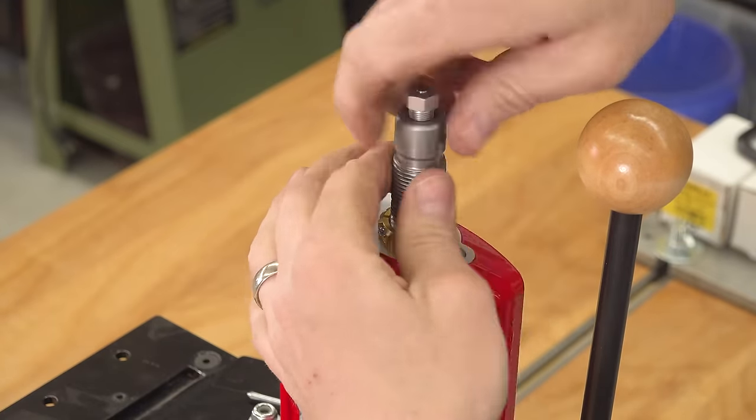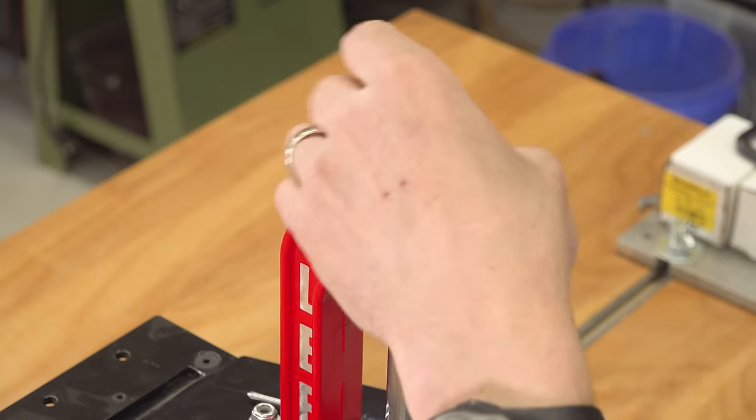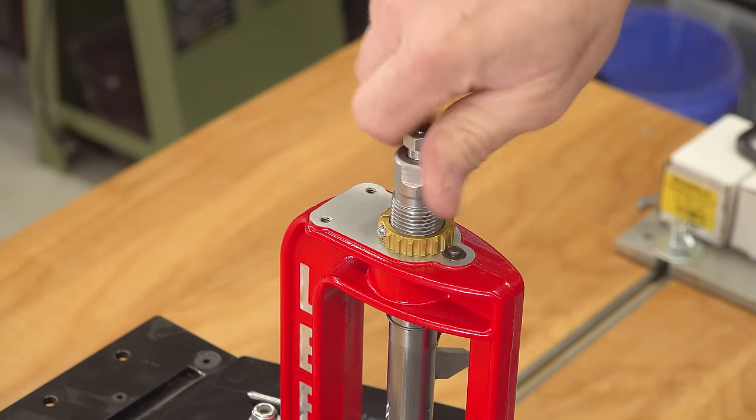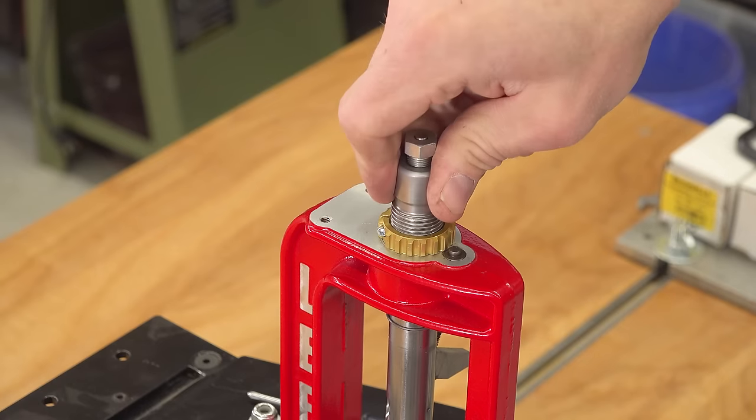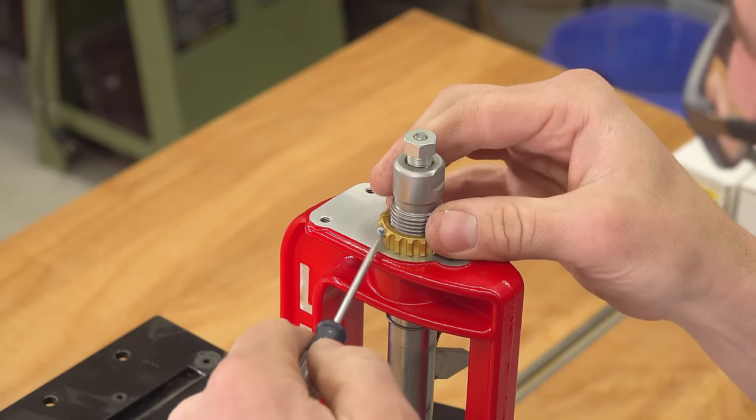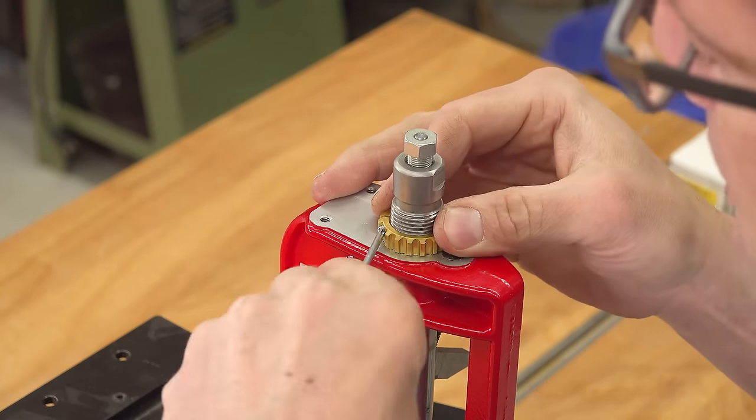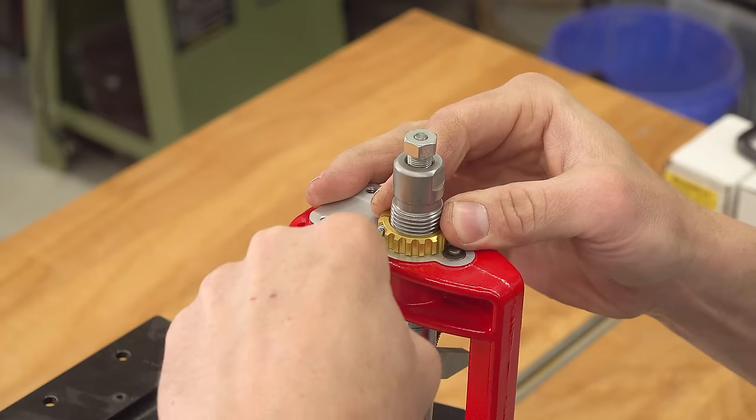Now we can screw that same 6.5 Creedmoor die in. I'm going to raise the ram to the top of the stroke until it touches the shell plate. And yes, we would want to make fine adjustments to the depth to make sure that we had set up the die according to our reloading requirements. Okay, I can feel that lock down.